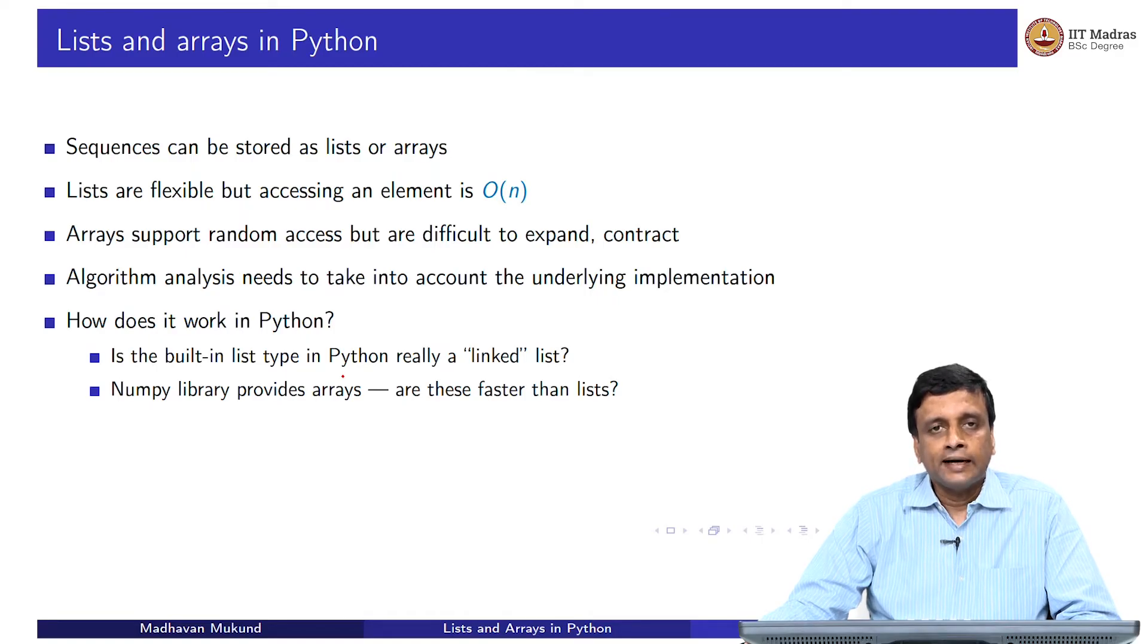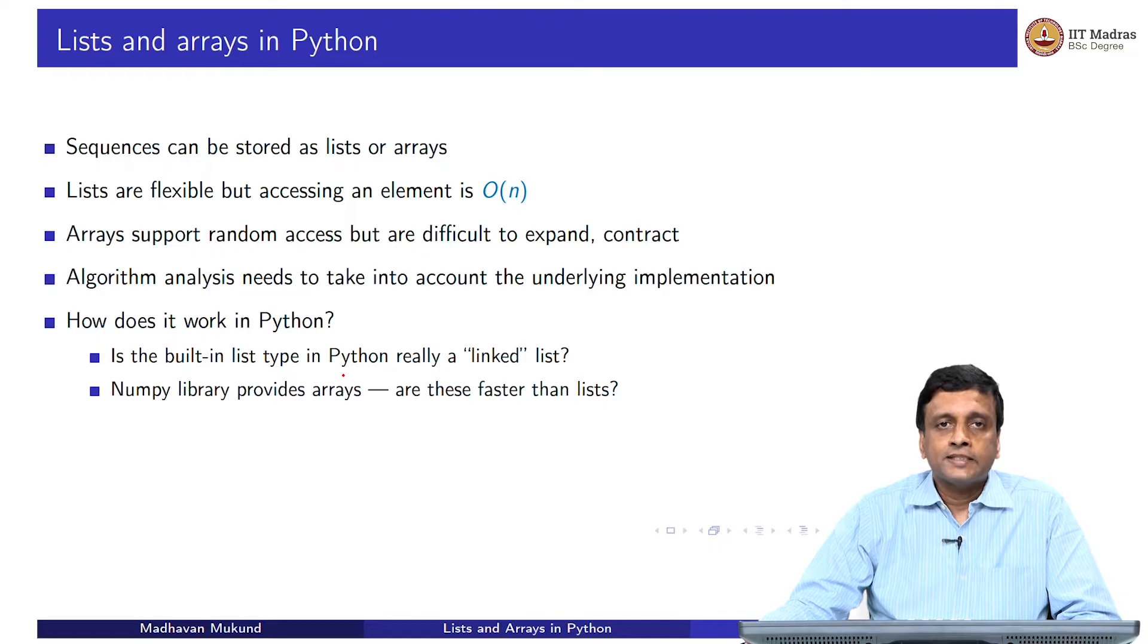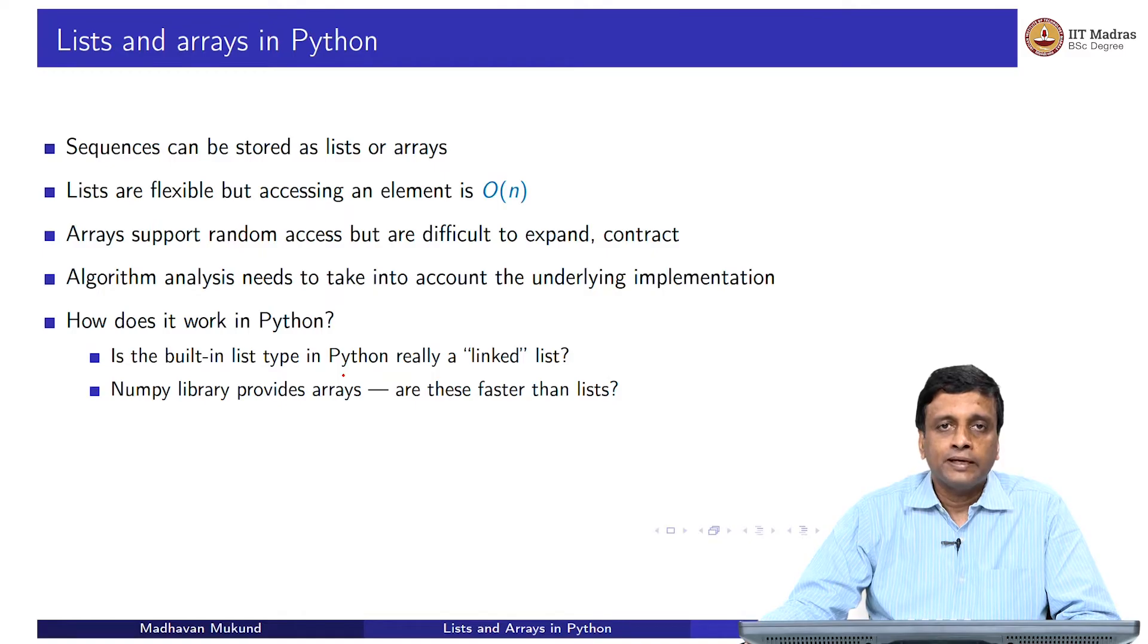When we do an algorithm like sorting or searching, we do these operations of looking up AI, AJ, exchanging them and so on. We need to be conscious about which implementation we are using of this list or sequence in order to make sure that the analysis we do is accurate. These are the classical understanding of lists and arrays. But now we have a built-in list type in Python.